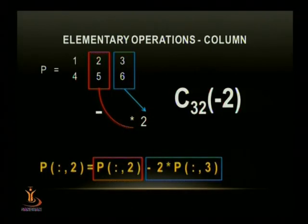See, again I have the same matrix P, 1, 2, 3, 4, 5, 6. I want to do a column operations C32 minus 2. This means what? Column 3 will be multiplied by minus 2 and added to column 2. Right? I have just drawn it diagrammatically. I will take column 3, multiply with minus 2 and subtract it from column 2. Clear? How to do this?